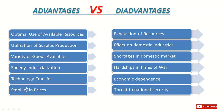Stability in prices is another advantage. For example, if a product is short in the country and not available in optimal quantity, the prices will go higher. To compensate, the country can import that product from some other country at reasonable prices, and when the quantity is enough, the prices will go down.